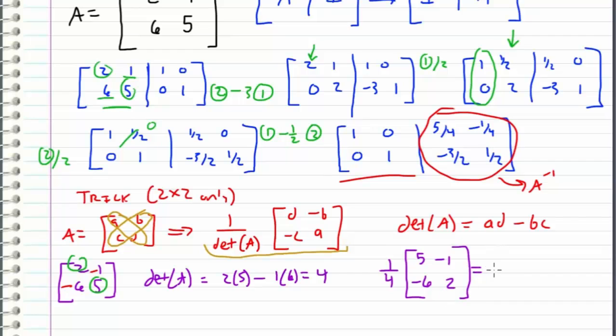So when we distribute this 1 fourth across all these components what we get is the matrix 5 over 4, negative 1 fourth, negative 3 halves and 1 half right here.